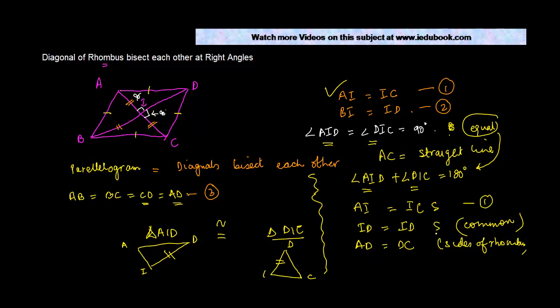Now, by the side, side, side criterion, we have proved that these two triangles are congruent.